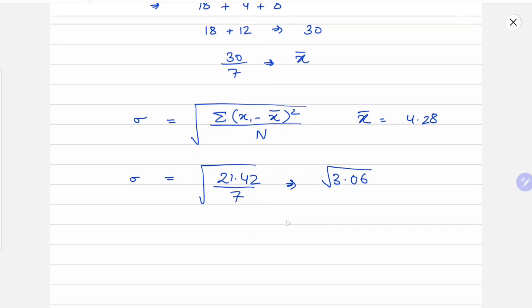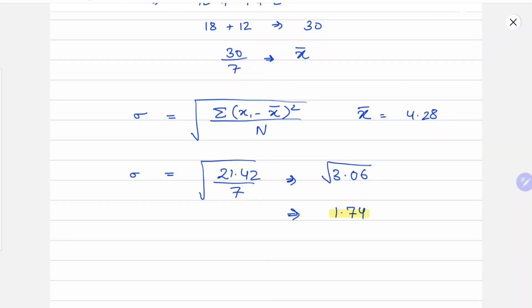Taking the square root of 3.06, our final answer for the population standard deviation of OnePlus sales comes out to be 1.74.